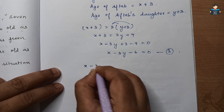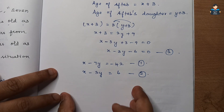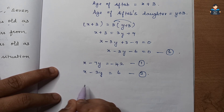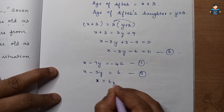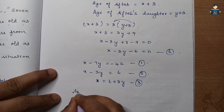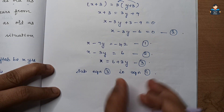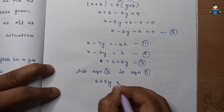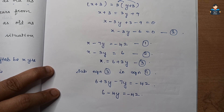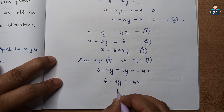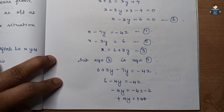So we have: x minus 7y equals minus 42 (equation 1) and x minus 3y equals 6 (equation 2). From equation 2, x equals 6 plus 3y (equation 3). Substituting into equation 1: 6 plus 3y minus 7y equals minus 42. So 6 minus 4y equals minus 42.